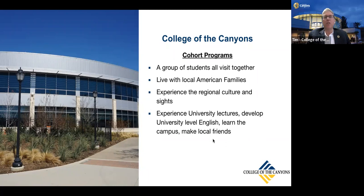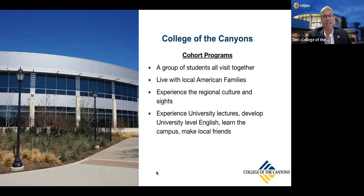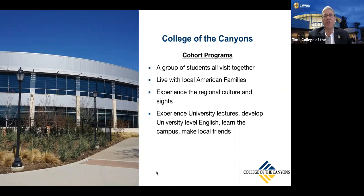At College of the Canyons, there are lots of great programs out there — MIT, Berkeley, UCLA, Stanford, Harvard, all the Ivy League, Yale — they all have programs. What we decided is we want to set up something for students who don't get into those programs. So we take a group of students and create a cohort, and those cohorts come to the College of the Canyons. They live with American families. They experience Southern California culture — everything from beaches to mountains to Disneyland and Universal Studios. They take university lectures, just portions of them, practice their university-level English, learn the campus, learn the area of Santa Clarita, and make local friends.